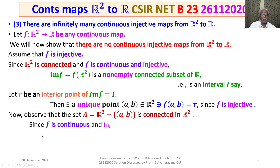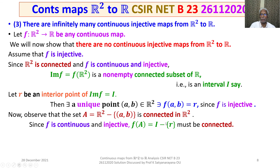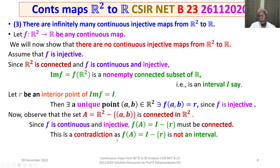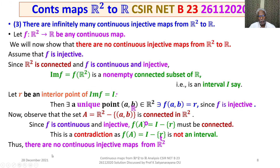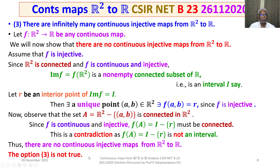Since F is continuous and injective, the image F(A) = F(R square minus {(A, B)}) equals I minus {R₀}, which is not an interval. This contradiction shows that the assumption that F is injective is false. Thus there are no continuous injective maps from R square to R, and therefore option 3 is not true.